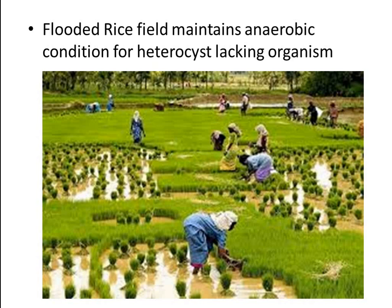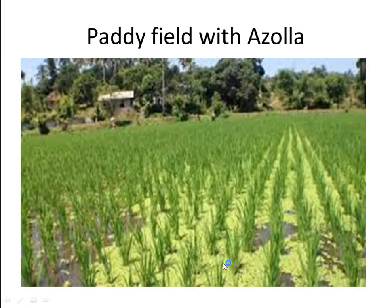Cyanobacteria that lack heterocysts can fix nitrogen only under anaerobic conditions, such as those that occur in flooded fields in Asian countries. Nitrogen fixing cyanobacteria of both the heterocyst and non-heterocyst type are a major means of maintaining an adequate nitrogen supply in the soil of rice fields. These microorganisms fix nitrogen when the fields are flooded and release the fixed nitrogen to the soil as the fields dry.